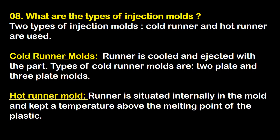Question eight: what are the types of injection mold? Two types are used — cold runner and hot runner. In cold runner molds, the runner is cold and ejected with the part. Types of cold runner molds are 2-plate mold and 3-plate mold. In hot runner molds, the runner is situated internally in the mold and kept at a temperature above the melting point of plastic.